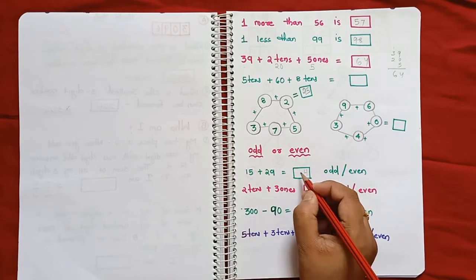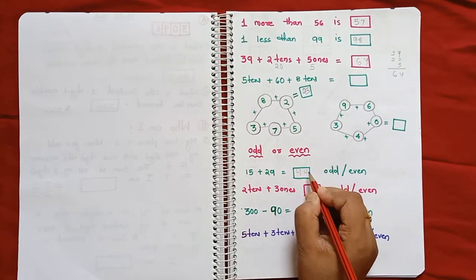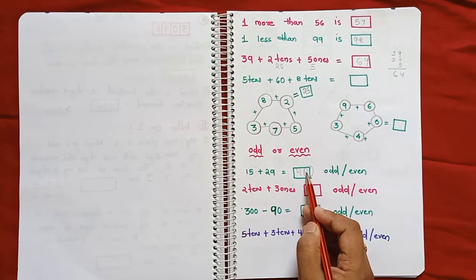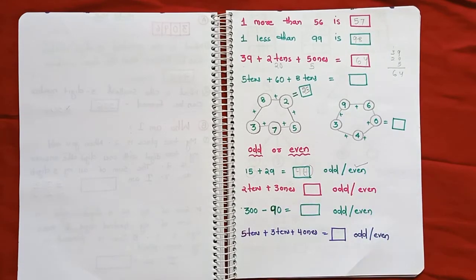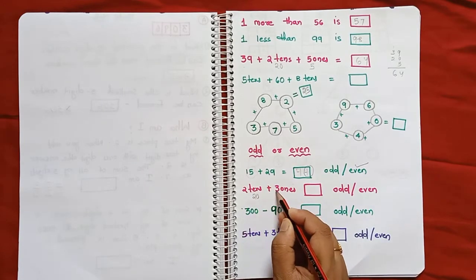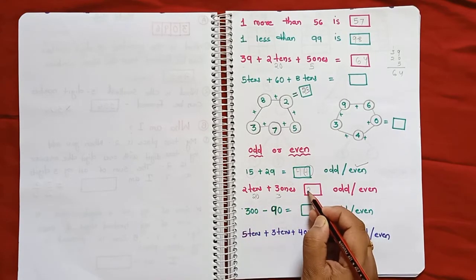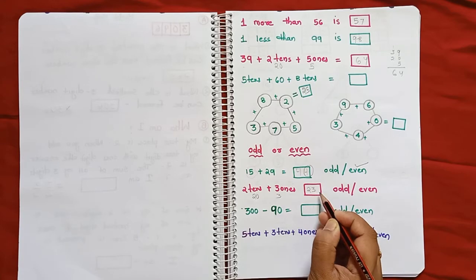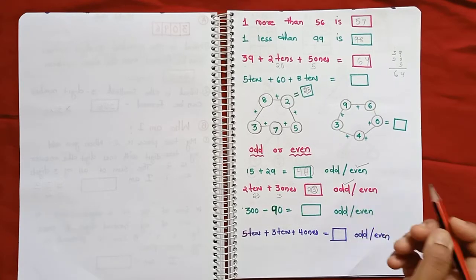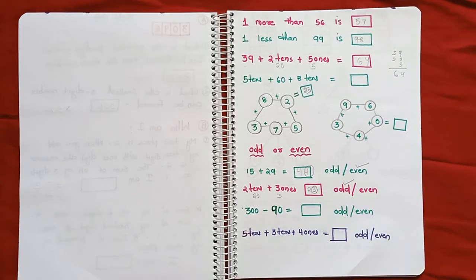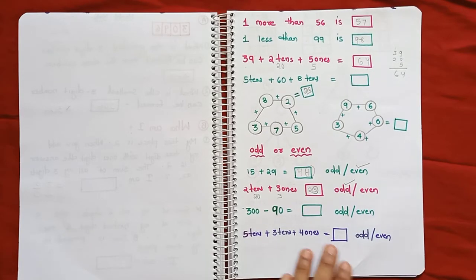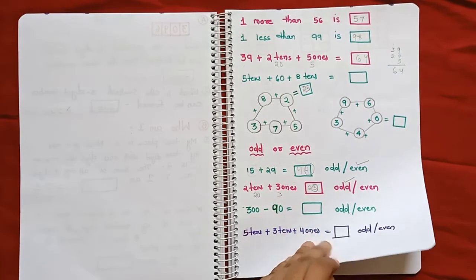Continuing: 2 plus 1 is 3, 3 plus 1 is 4, so 44 — the number is even. We check: 2 tens means 20, 3 ones means 3, so the answer is 23. Since the ones digit is 3, that is odd. So I have given a mix of addition, subtraction, and odd/even — after finding the answer, you check whether it is odd or even. I have given both types of questions.